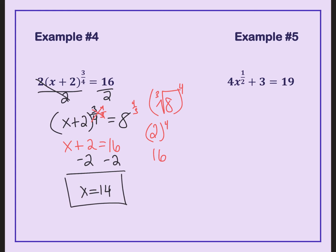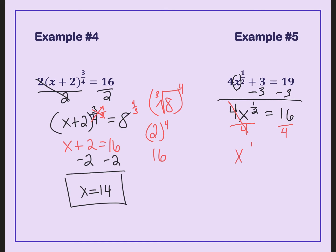We'll try another one. Our goal is to isolate whatever is raised to that one-half power. Be very careful here — because there's no parentheses, that 4 is not raised to the one-half power. It's like the x is in parentheses. First, subtract 3 from both sides and you get 4x to the one-half equals 16. That 4 is not attached to the one-half, so divide by 4. You get x to the one-half equals 4. Multiply the exponent by 2 over 1 — basically squaring — and you get x equals 16.